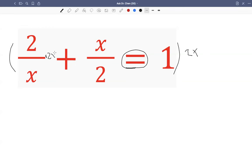So I multiply this one with 2x. Of course, x divided by x becomes 1, so I'm left with 2 times 2 times 1, which is 4. I multiply this term with 2x. 2 cancels over 2. I have x times x, x squared. Then equals 1 times 2x equals 2x.